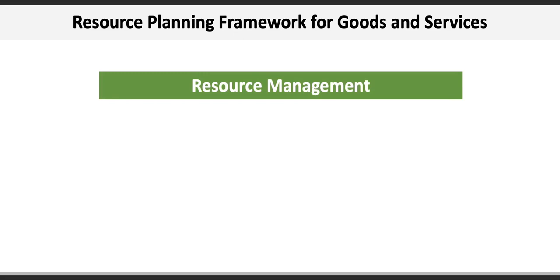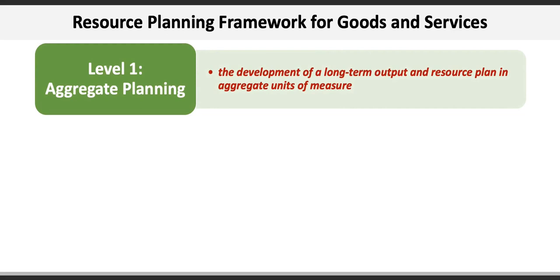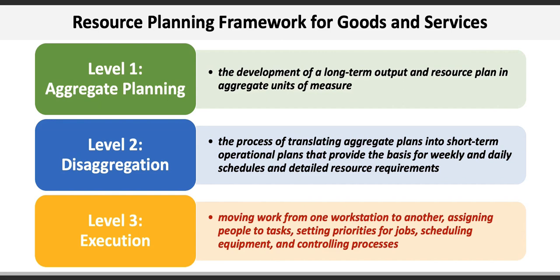A generic framework for resource planning is broken down into three basic levels. Level 1 is aggregate planning, which is the development of a long-term output and resource plan in aggregate units of measure. Level 2 involves disaggregation, which is the process of translating aggregate plans into short-term operational plans that provide the basis for weekly and daily schedules and detailed resource requirements — essentially breaking up the elements of production into smaller, more detailed elements. Level 3 is execution, which involves moving work from one workstation to another, assigning people to tasks, setting priorities for jobs, scheduling equipment, and controlling processes. This is essentially the building phase.